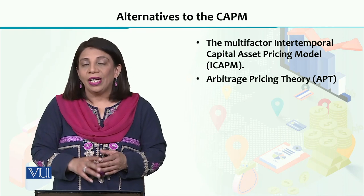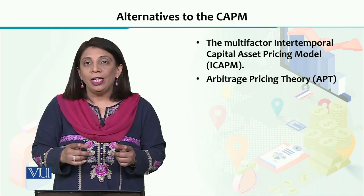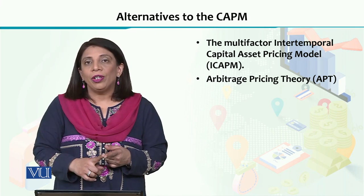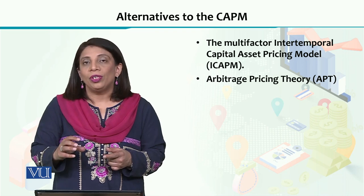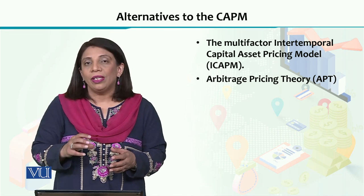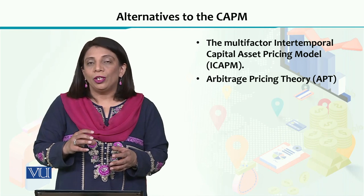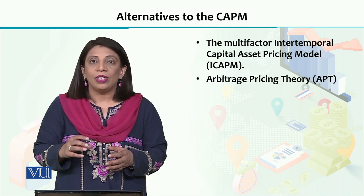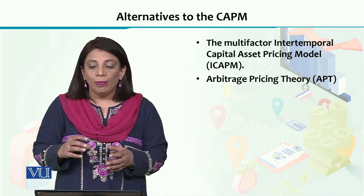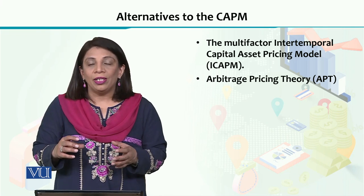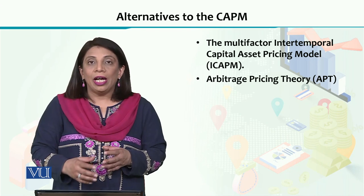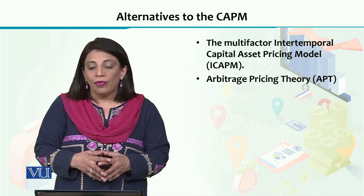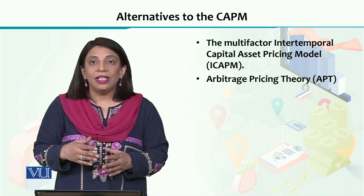The multi-factor inter-temporal model assesses inter-temporal differences, going beyond just the risk-free return and the market's overall index as used in CAPM. There are a number of other factors used to find out the expected rate of return, and therefore the model is known as ICAPM — the inter-temporal capital asset pricing model — which takes into account a number of different factors. There is also another theory used to assess the expected rate of return, known as the arbitrage pricing theory.